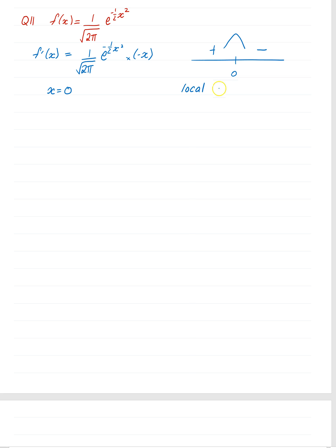So local max at the point 0, and that's going to be our y value now. So anything here, 0 squared is 0 to the power of 0. e to the 0 is 1, so it's going to be 1 over root 2π there.